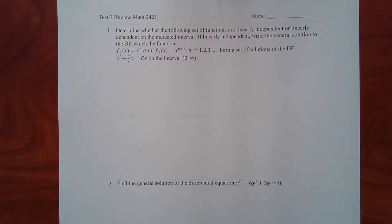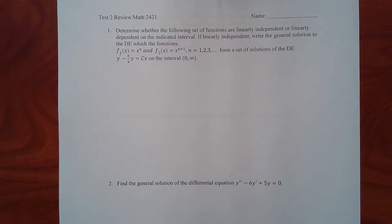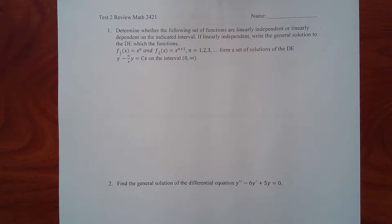Independent and dependent mean that the functions are either linear combinations of each other or not. If they are linear combinations of each other, you'll be able to cancel them out and get zero. That's why when it's linearly dependent it comes out to zero. If they're linearly independent, that means they're so different from each other that no c1 or c2 will cancel them out — at least not for every single x.